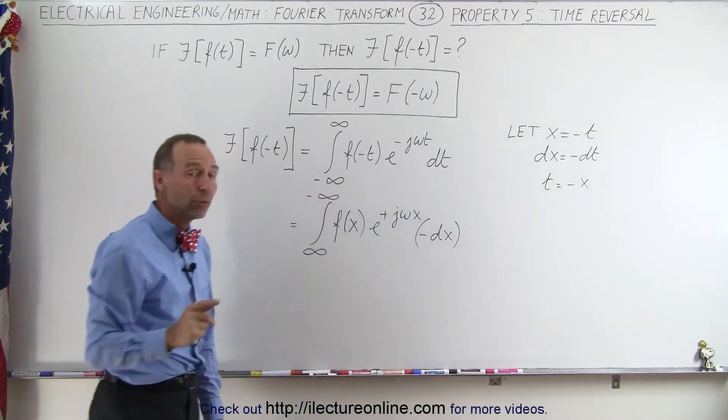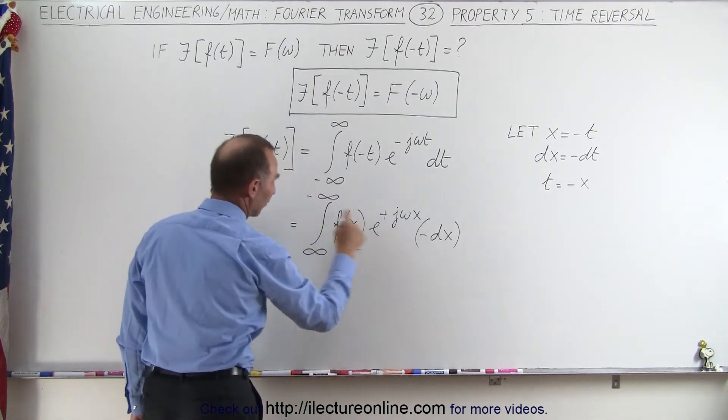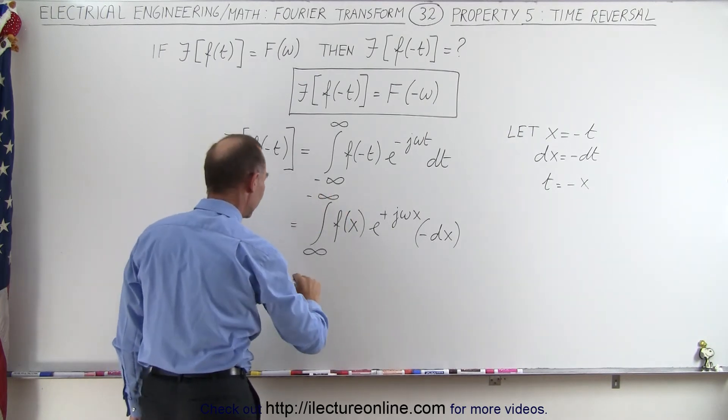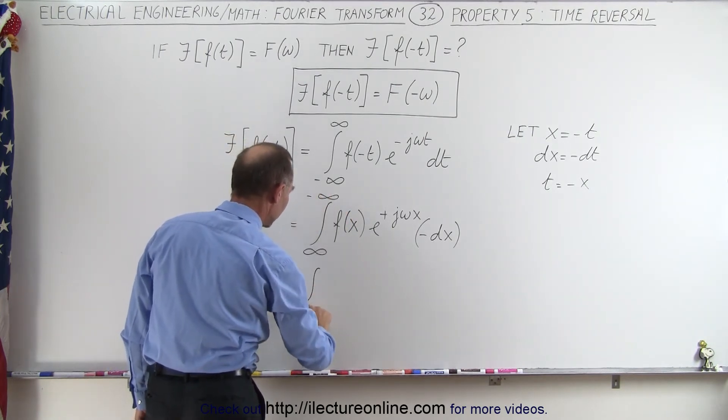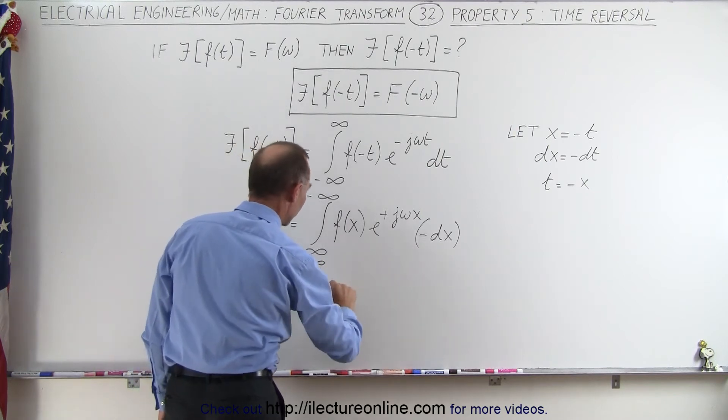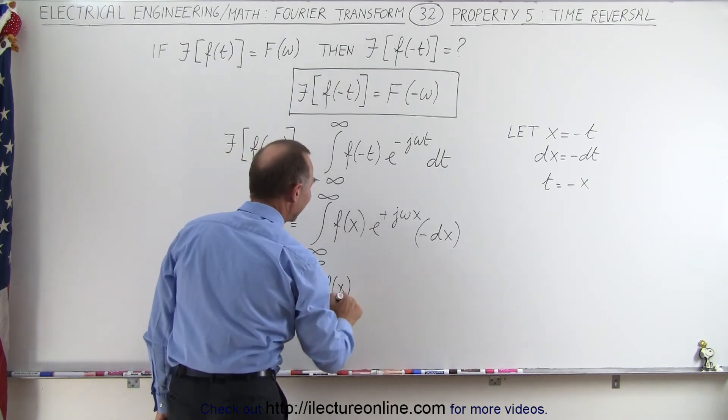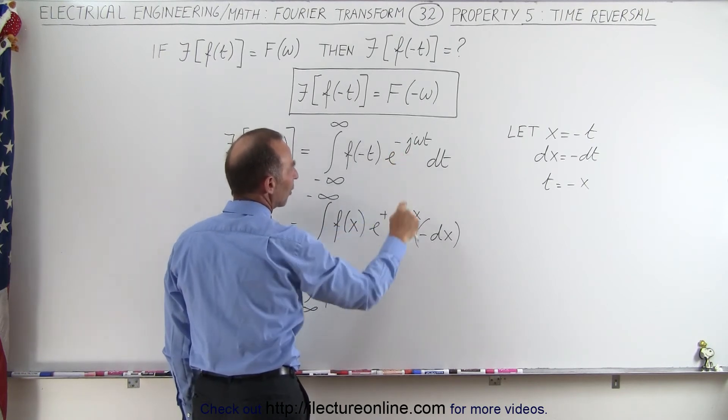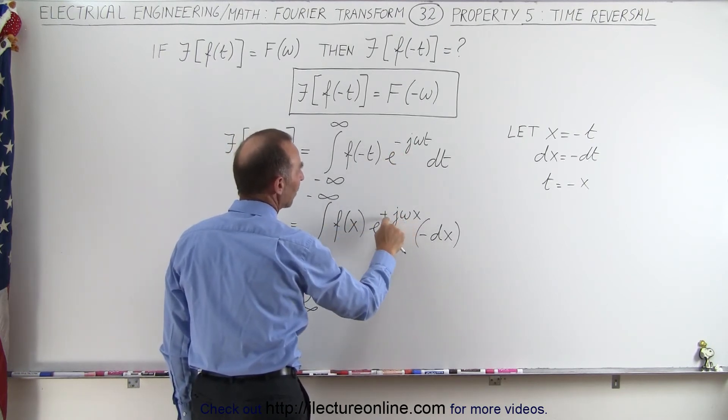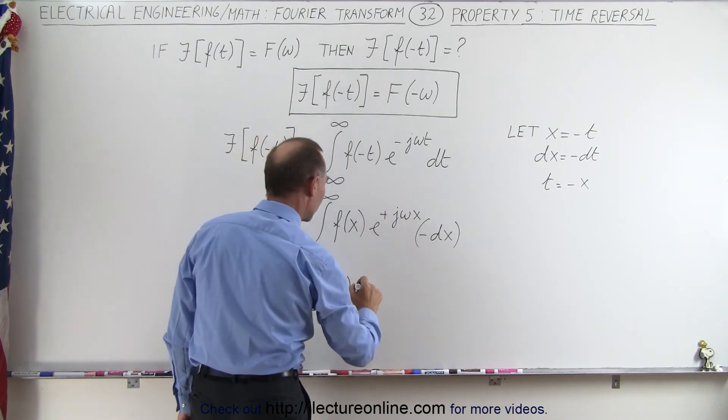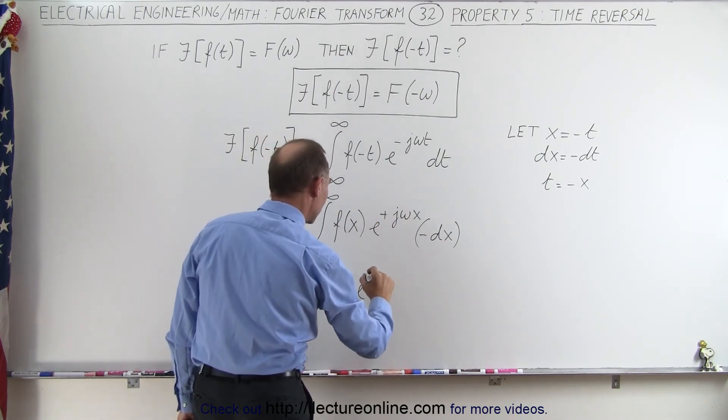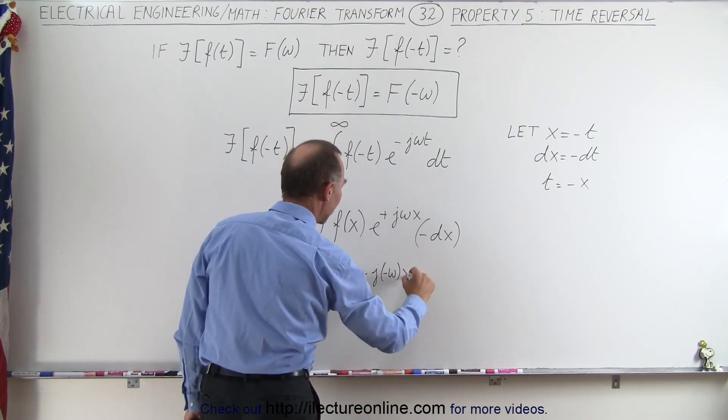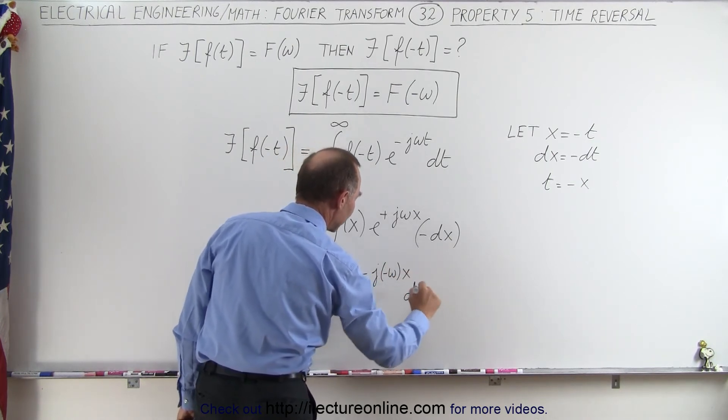So now what we can do with the minus here, we can move it to the front of the integral, but then we can apply it to the limits and turn the limits around again. So this becomes equal to the integral from minus infinity to infinity of f of x. And then we want to place this in this format right here. So we're going to call this a minus omega and put a minus over here. So that will be equal to e to the minus j times minus omega times x times dx like this.